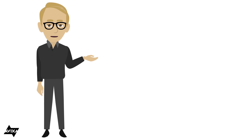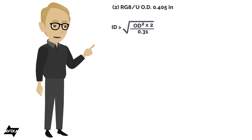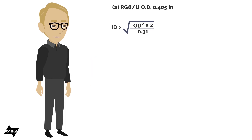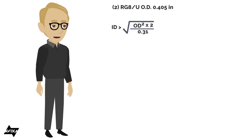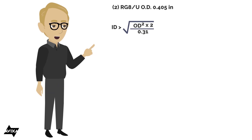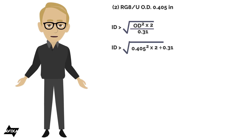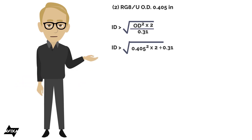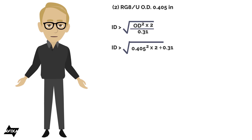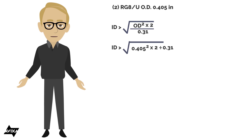Let's do a couple more problems with conduit capacity. This time I'm doing a couple of coax cables, and they're each 0.405 inches outer diameter. Since I'm only doing two, my fill percentage is going to change — in this case it's going to be 0.31, or a 31% fill. The inner diameter of the conduit I need must be larger than the square root of 0.405 squared times two, divided by the fill percentage of 0.31.